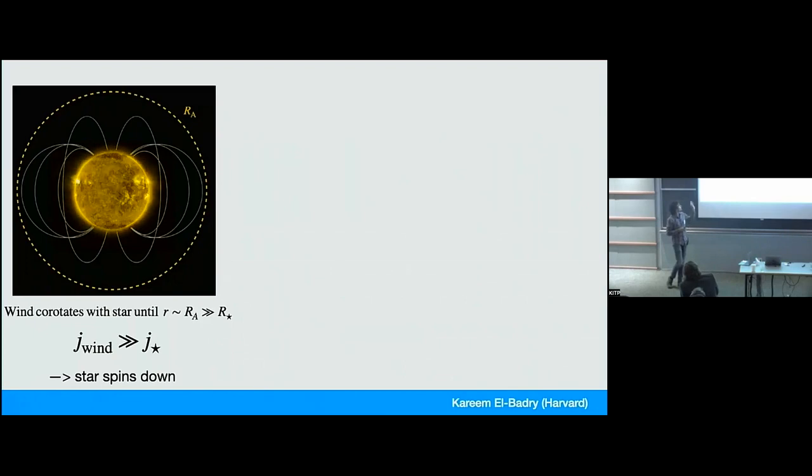And so if you imagine a piece of solar wind co-rotates with the star until it gets to some radius, which I call RA, which stands for Alfvén radius. If that is bigger than the radius of the star, then the wind will carry away angular momentum. And so if this goes on for a while, eventually the star will spin down.